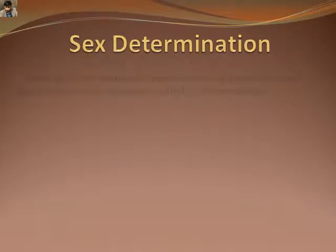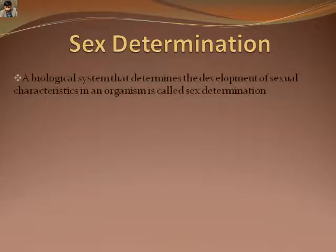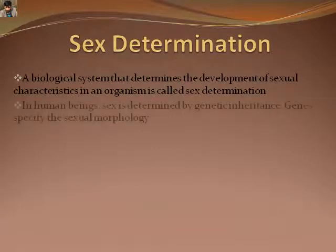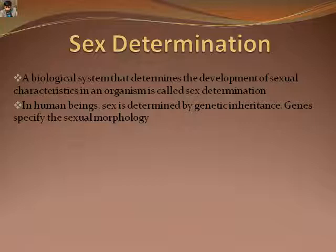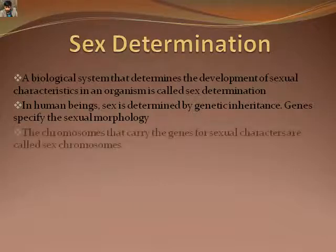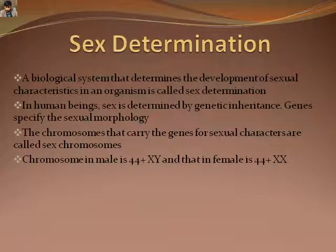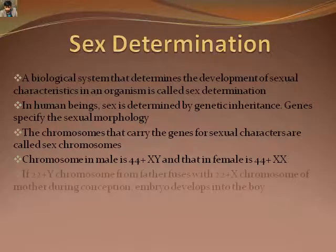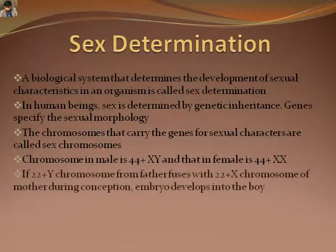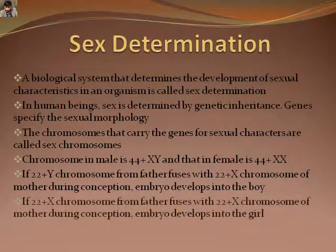Sex determination is one of the most important biological systems that determines the sexual characteristics in an organism. Sex is determined by genes or some environmental factors. In human beings, it is done by genes. When 22 autosomes and one Y chromosome from the father fuse with 22 autosomes and one X chromosome from the mother, the embryo develops into a boy. Whereas when 22 autosomes and one X chromosome from the father fuse with 22 autosomes and one X chromosome from the mother, a girl is formed.